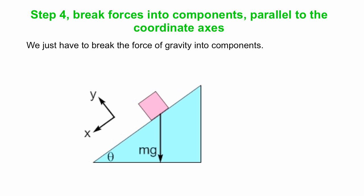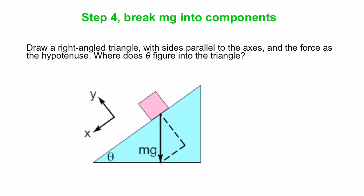So we have this angle theta at the bottom of the ramp. We'll draw a right angle triangle. One side of the right angle triangle is parallel to the y axis, the other side is parallel to the x axis, and mg is the hypotenuse of this right angle triangle. The full force is always on the hypotenuse.